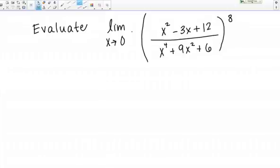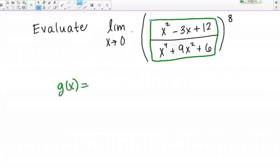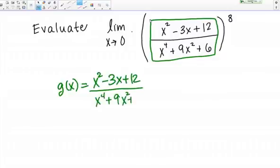In this case, my inner function is this rational function here that I've outlined in green. I'm going to call my inner function G of X. This is my inner function: X squared minus 3X plus 12 over X to the 4th plus 9X squared plus 6.